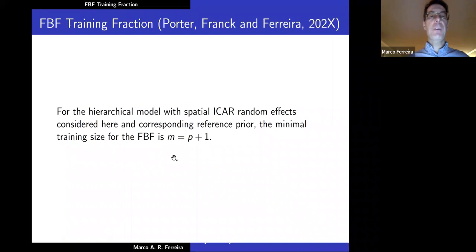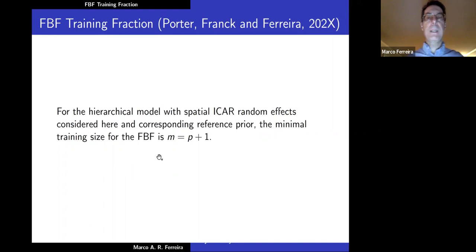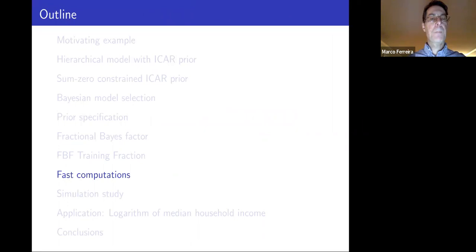We have a result that the minimal training size for the fractional Bayes factor to be well-defined is m = p + 1, where we restrict to positive integer values of m.